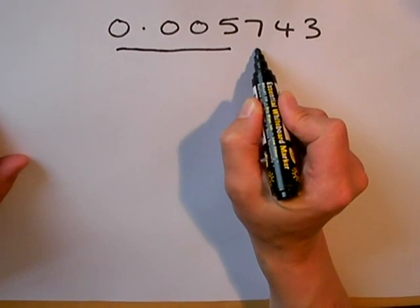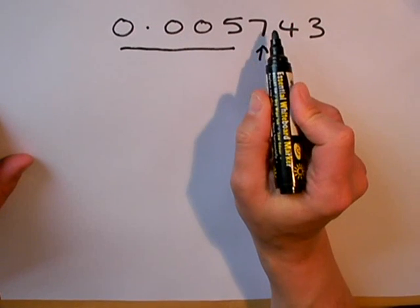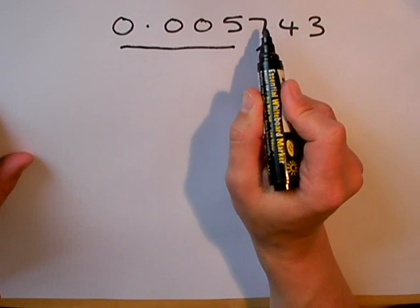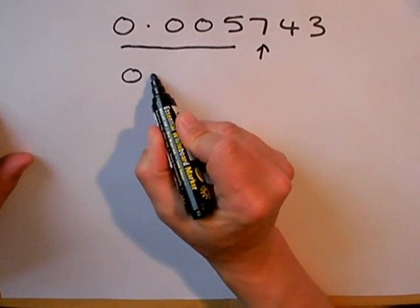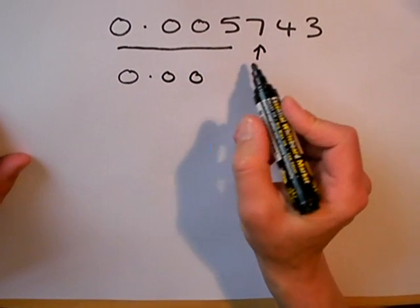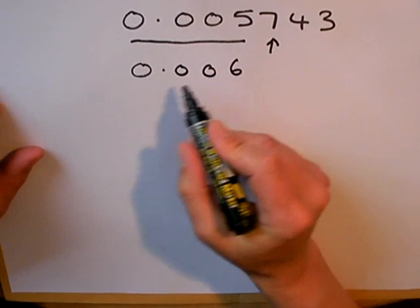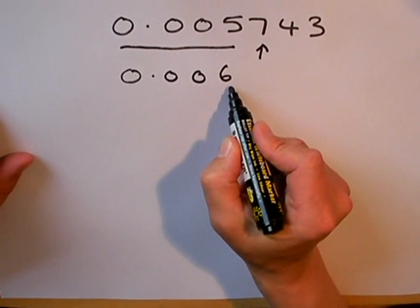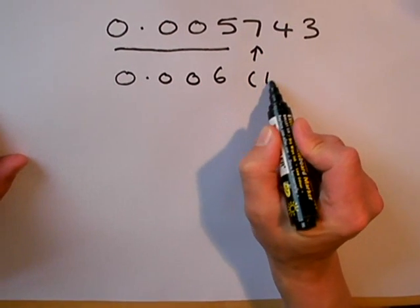Then just like before I look at my next digit which happens to be more than 5. So I'm going to round up. 0.005743 is rounded off to 0.006 when I round it to one significant figure.